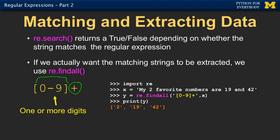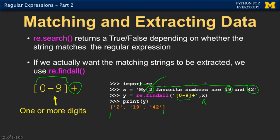Now we're going to use a function in the regular expression library called findAll. We pass it the string we're looking through and the pattern — for example, one or more digits. It runs all the way through the text checking to see when the pattern matches. It gives us back a list of all the matches, extracting out the pieces. It's kind of like a split, a for loop, and a number check all rolled into one.